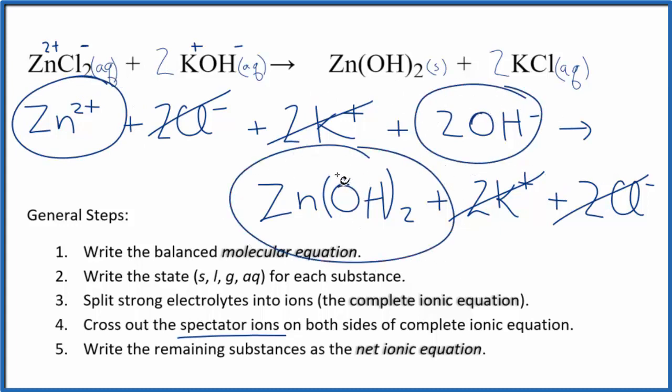And that leaves us with our net ionic equation for ZnCl2 plus KOH. That's our net ionic equation. Let me clean this up a bit and add the states in, and then we'll have the net ionic equation.